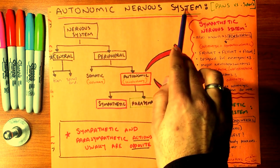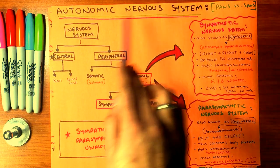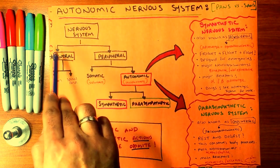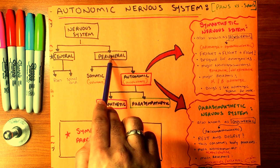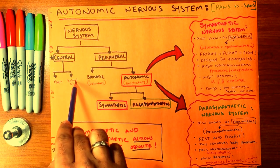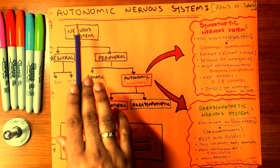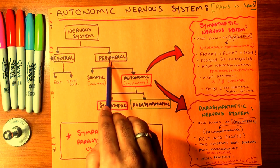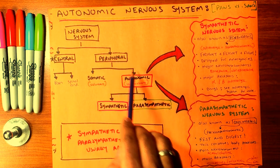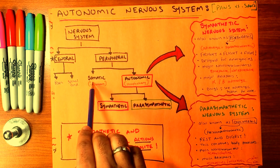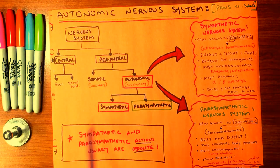To understand the system, we need to understand where the autonomic nervous system derives from. The nervous system has two parts: central and peripheral. Central divides into brain and spinal cord, which is not today's topic. We are going to discuss the peripheral autonomic nervous system, as well as the somatic nervous system.